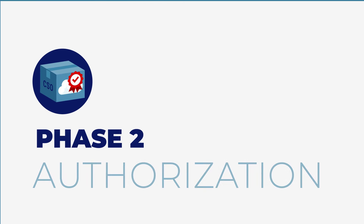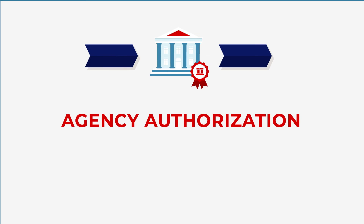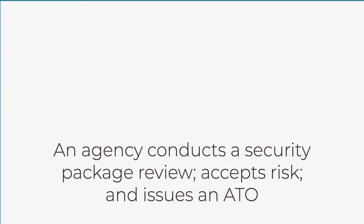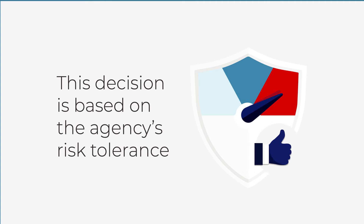The second phase is called authorization. For an agency authorization, an agency conducts a security package review, performs a risk analysis, accepts risk, and issues an ATO. This decision is based on the agency's risk tolerance.